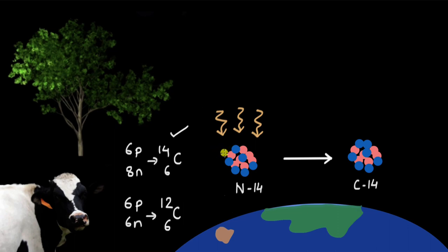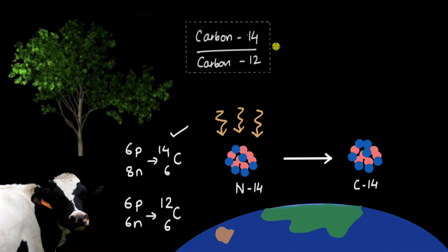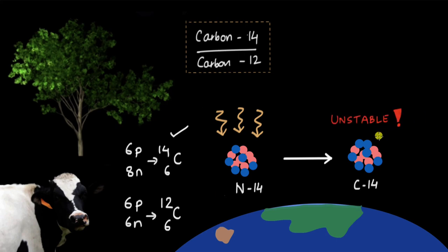This process of nitrogen changing into carbon-14 is not something that happens every once in a while — it's a constant process happening at a steady rate, so much so that at any given point the ratio of carbon-14 atoms to carbon-12 atoms in the air, in plant tissue, or even in us remains approximately the same. This ratio is a fixed number in living organisms and in the atmosphere. The interesting bit is when the plant or living organism dies: they are no longer taking anything up, so there is no further entry of carbon-14.